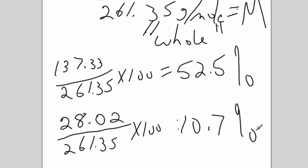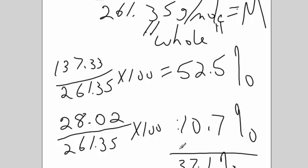And I could do the same for the oxygen. Or, in fact, I could just subtract these from 100. 100 minus 52.5 minus 10.7 is 37.1%. So the oxygen must be 37.1%. I don't even have to calculate it directly because obviously all the percents have to add up to 100%.